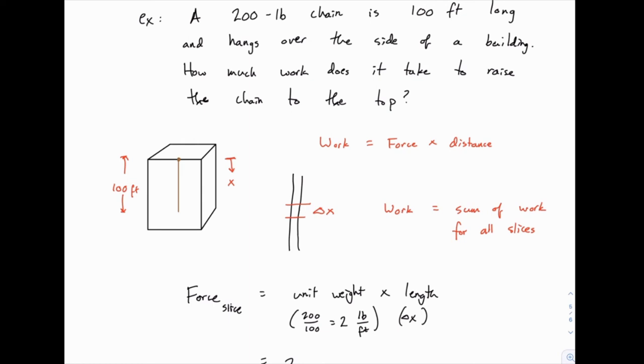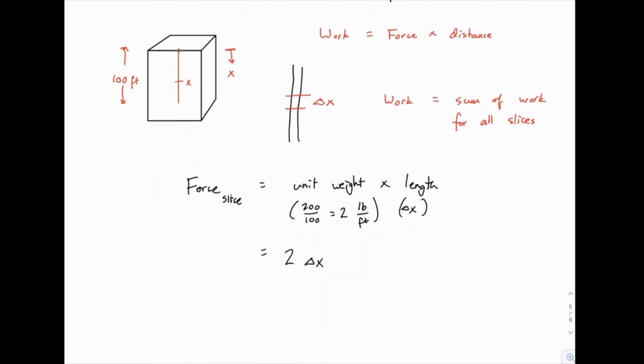Now when we cut one of these slices, our slice is at some variable position x. And that position changes depending on where we pick our slice. But an arbitrary slice, we're just going to say that's at location x. The distance it needs to be raised, if you stop and think about it for a second, it's pretty simple that it just needs to be raised x feet. If x is 50, it needs to be raised 50 feet. If x is 100 down here at the bottom, it needs to be raised 100 feet. If x is 25, it only needs to go up 25 feet. So whatever the x value of our slice is, the distance will just equal x.